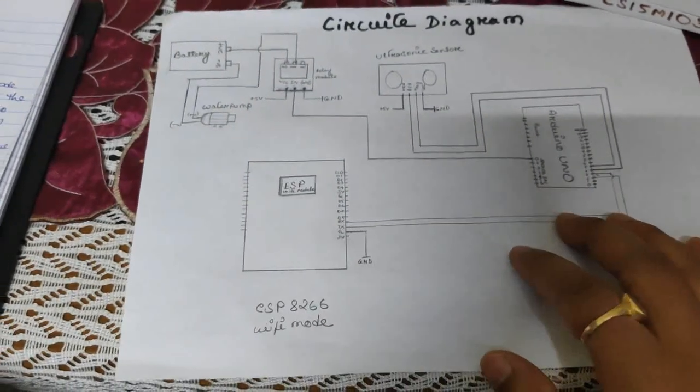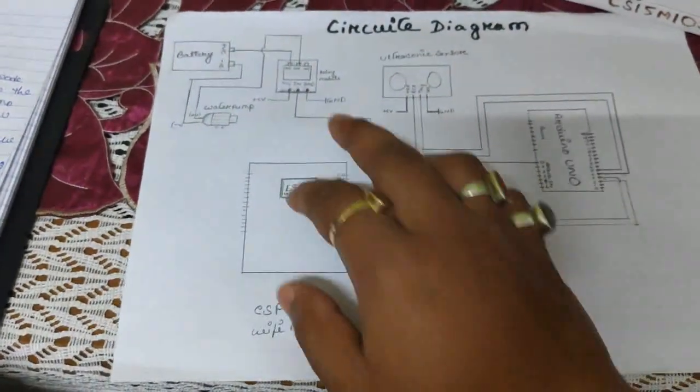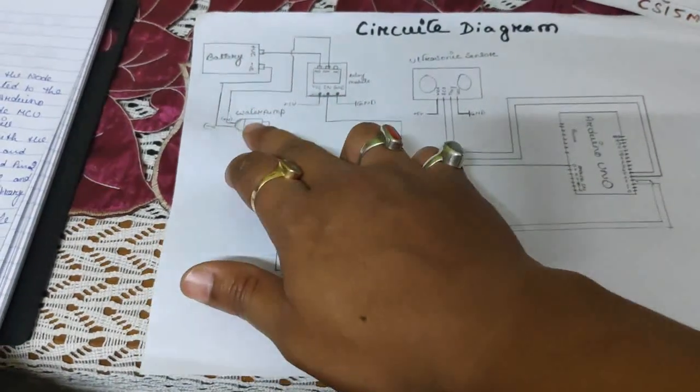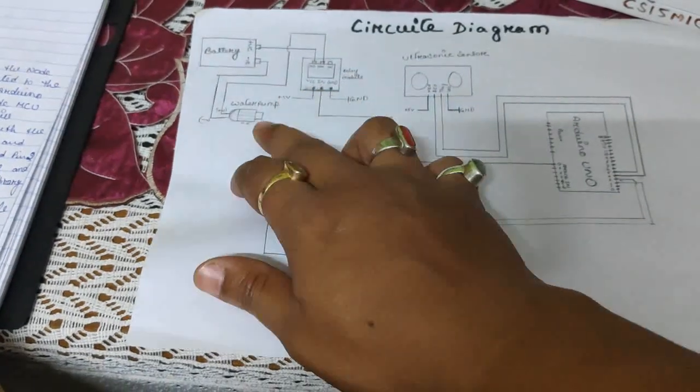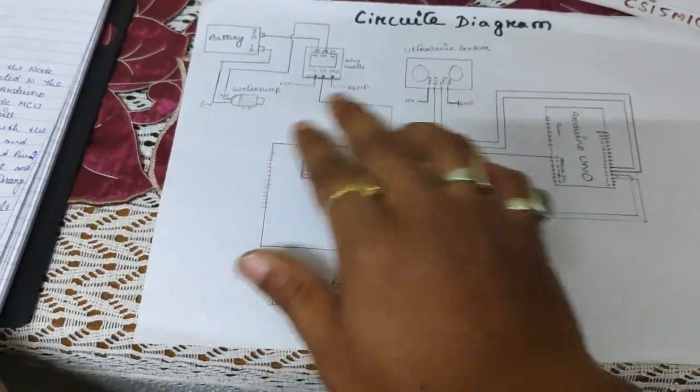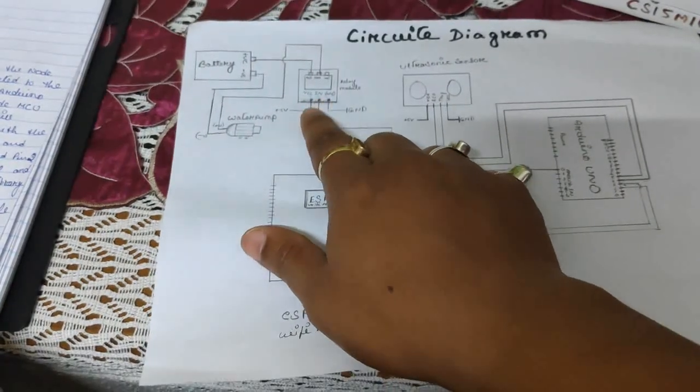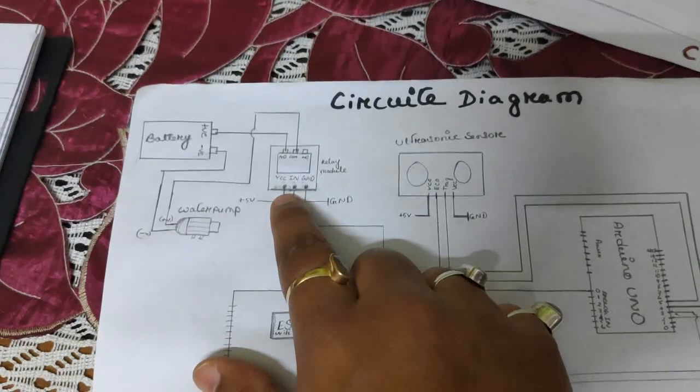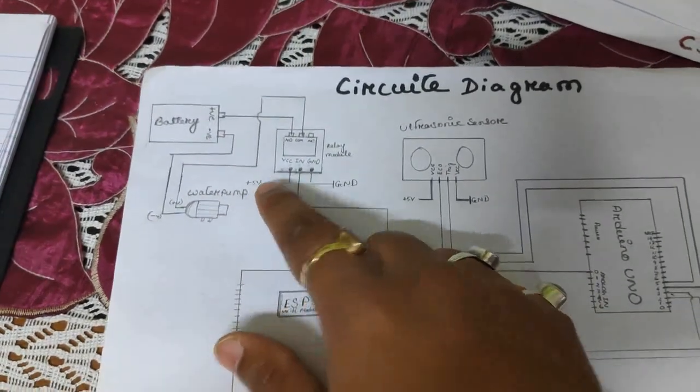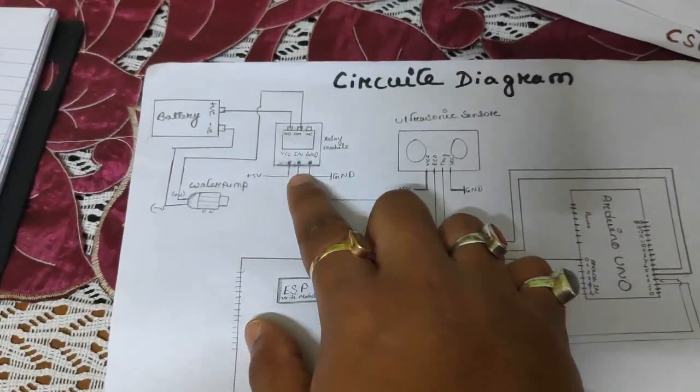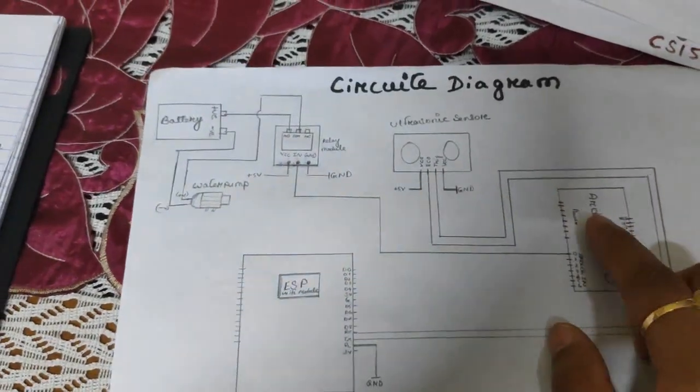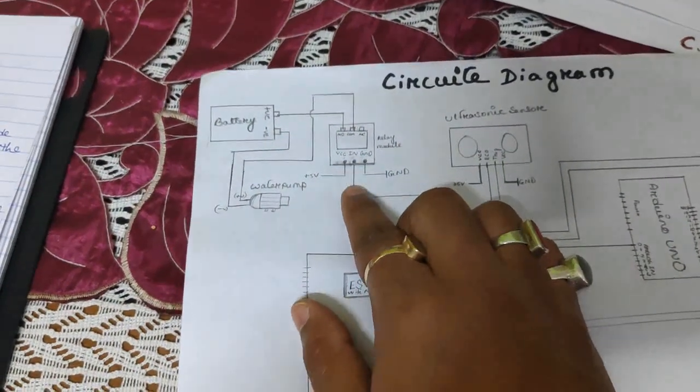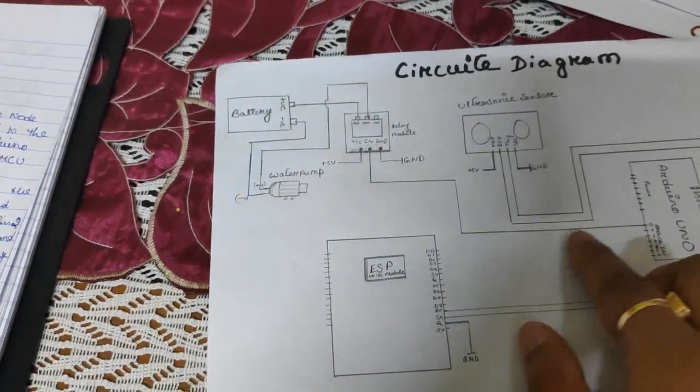So next, this is the 5 volt relay module which is used to control the water pump. It will control the on off of the water pump. So there are 3 pins: VCC, ground, in. So VCC pin of the relay module is connected to the 5 volt of the Arduino Uno, and the ground pin is connected to the ground pin of the Arduino Uno, and the in pin of the relay module is connected to pin number 0.